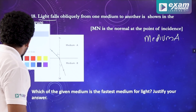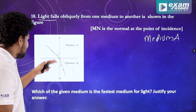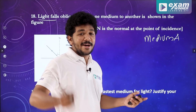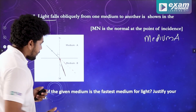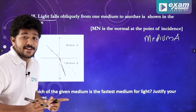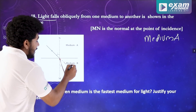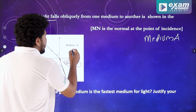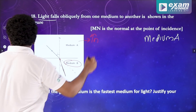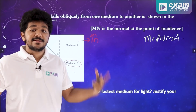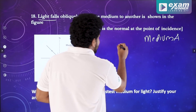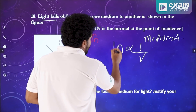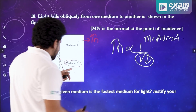Now we will refract. The incident light will refract towards the normal. Refractive index — this is medium B. The velocity of light is inversely related to refractive index. N is inversely proportional to V. One formula is n2/n1 = v1/v2. Then n2 is greater than n1 implies v1 is greater than v2.